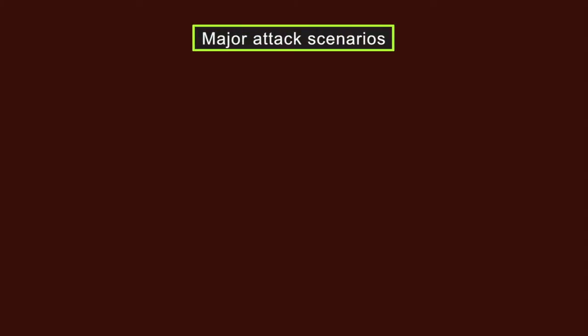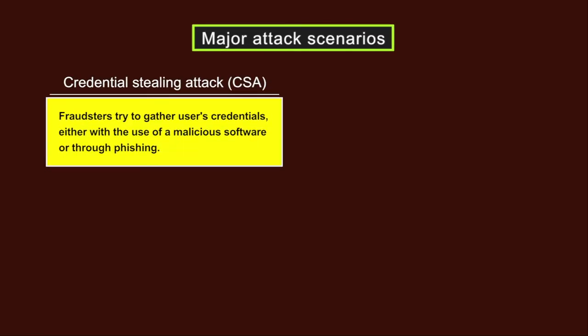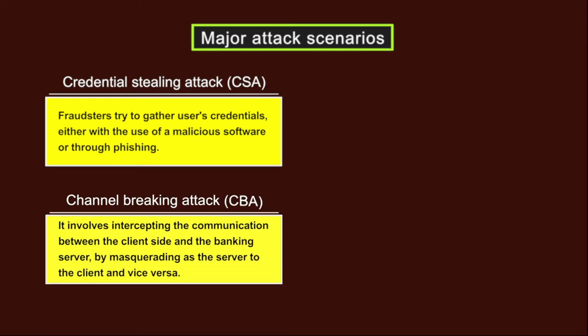The following are the major attack scenarios. Number one is a credential stealing attack, where fraudsters try to gather users' credentials either with the use of malicious software or through phishing. Number two is a channel breaking attack. It involves intercepting the communication between the client side and the banking server by masquerading as the server to the client and vice versa.